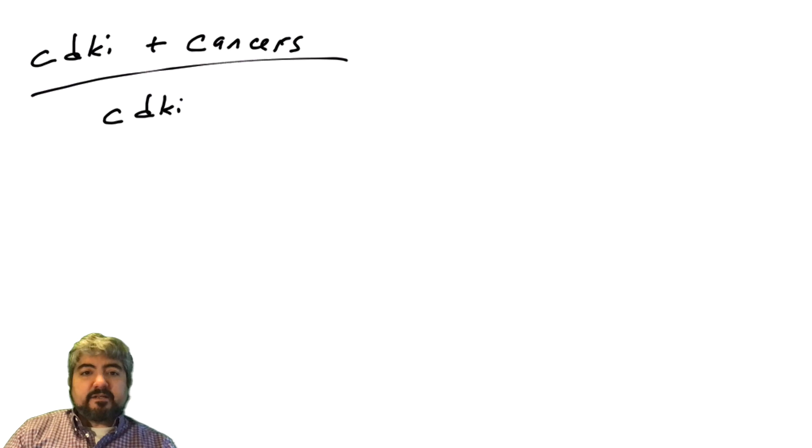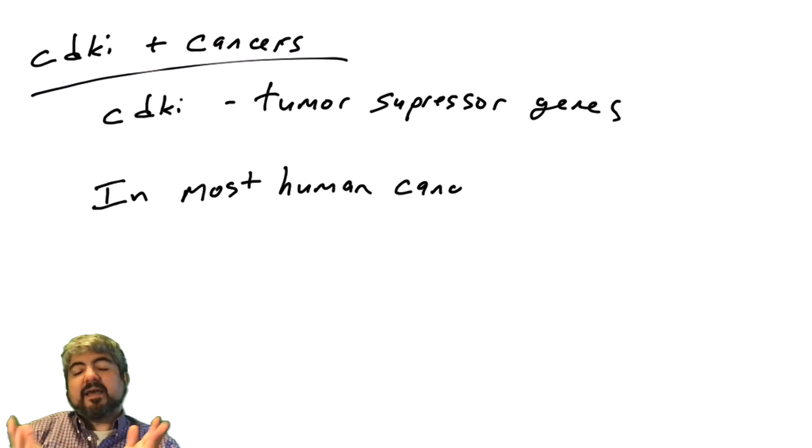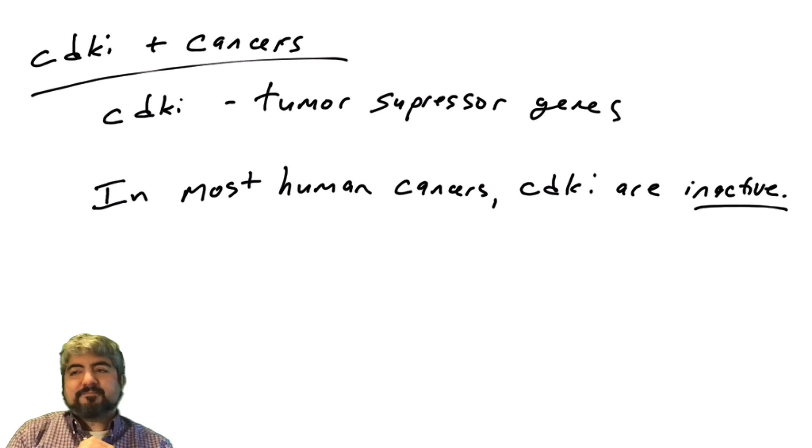In human cancers, CDK inhibitors are commonly either mutated or dysregulated. So what do you think CDKIs are? Are they oncogenes or are they tumor suppressor genes? So they're going to be tumor suppressor genes because CDKIs stop the cell progressing through the cell cycle when they are present and when they are active. In most human cancers, CDKIs are not present or not active for a variety of reasons. But either way, if CDKIs are not present or not active, that allows the cell to keep going through the cell cycle unabated, right? If CDKIs were present, they could stop the cell from going through the cell cycle.